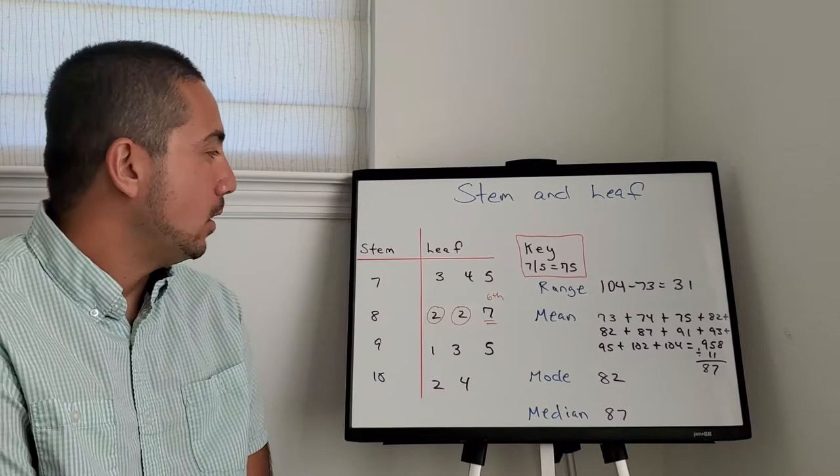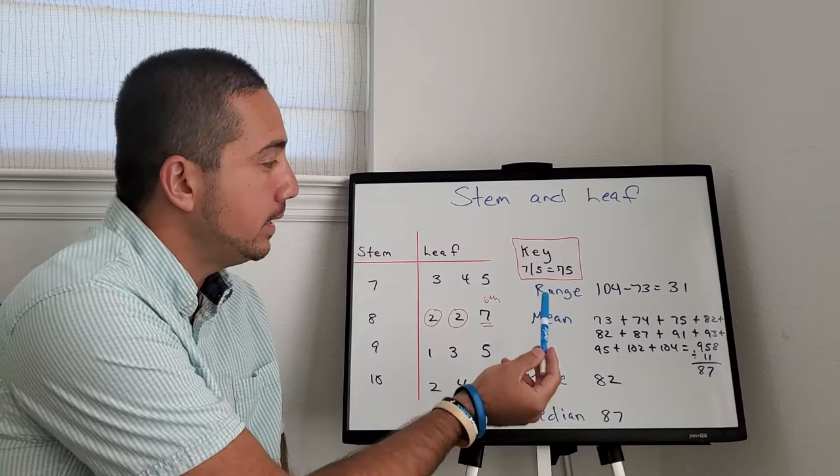And we're back with our last graph. This one is stem and leaf. So how does this work? You see the stem here, you see the leaf here.